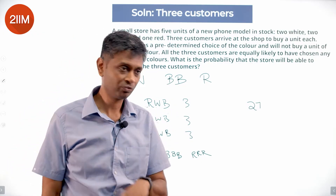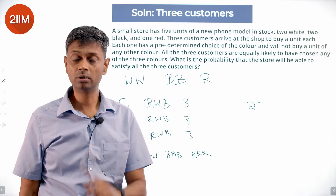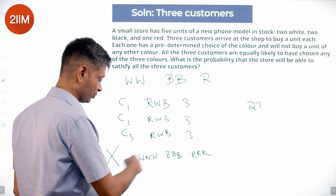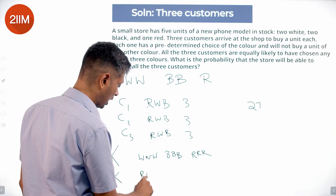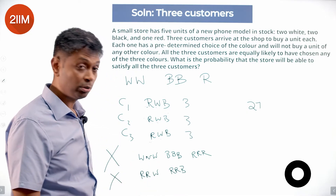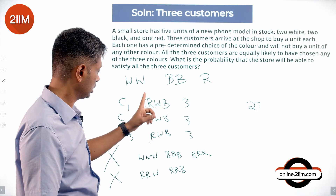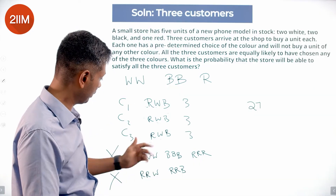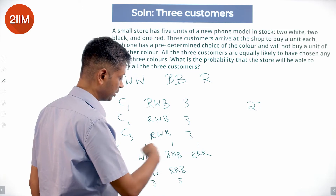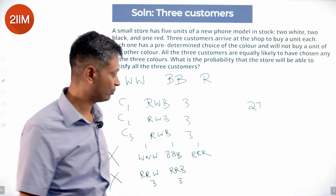Now consider two-same-one-different combinations. Two whites and a black — doable. Two whites and a red — doable. Two blacks and a white — doable. Two blacks and a red — doable. Two reds and anything — we have trouble, not possible. So the not-possible category includes RRW and RRB. RRW can happen in three arrangements; likewise RRB can happen in three ways. That gives 3 + 3 = 6 impossible arrangements from this category, plus 3 all-same impossible cases — total 9 not possible. So 27 − 9 = 18 are possible.